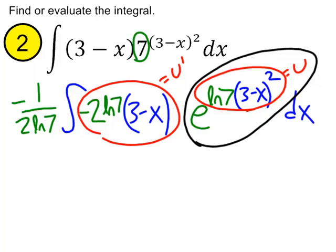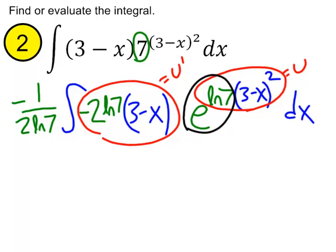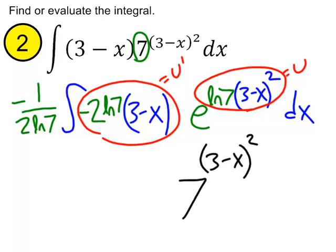But let's go ahead and, we know we're going to convert that back to a base 7 anyway. So, let's go ahead and, instead of writing it as e to the ln 7, let's put the original 7 to the 3 minus x squared. And, again, that's our e to the u power. This u prime goes away, and this constant stays out in front. So, negative 1 over 2 ln 7.